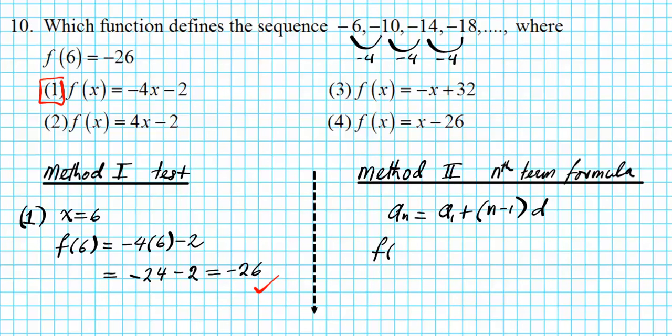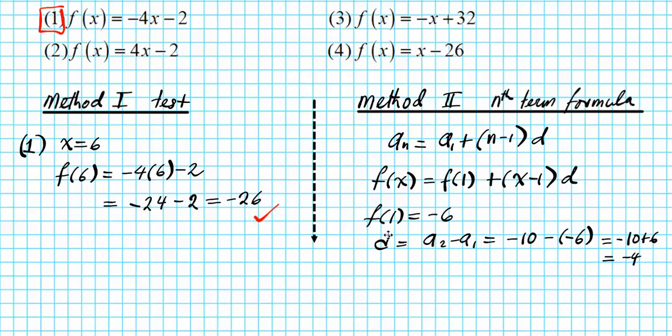So the formula is an equals a1 plus n minus one times the common difference. In function format, it's going to be f of x equals the first term, which could be considered f of one, plus x minus one times the common difference. So all we're going to do is plug in f of one, the common difference, into this expression and compute what the function is going to be. What is f of one? f of one is the first term of the sequence, which is negative six. The common difference, we already determined what it is, but if you didn't know, you just say a2 minus a1. That is the common difference, negative 10 minus negative 6, which is negative 10 plus 6, and that is negative 4.